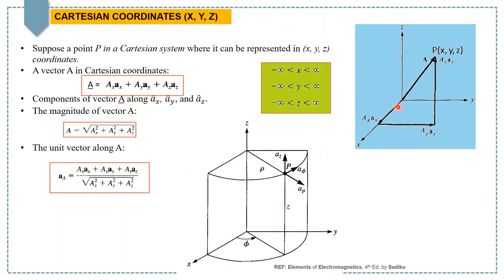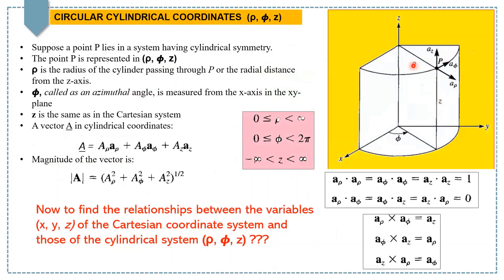Now suppose that point P is in cylindrical symmetry. Then we need to represent this point P in new coordinates: rho, phi, and z, where rho is the radius of the cylinder passing through point P, phi is the azimuthal angle measured from the x-axis in the XY plane, and z is the same as in the Cartesian system. In the direction of rho we have a unit vector a-rho, in the direction of phi we have a unit vector a-phi which is tangential to any circle at that point, and az is the unit vector in the direction of z.